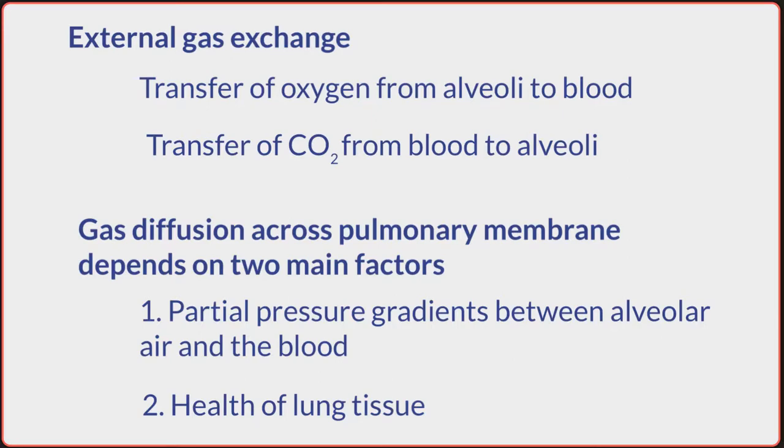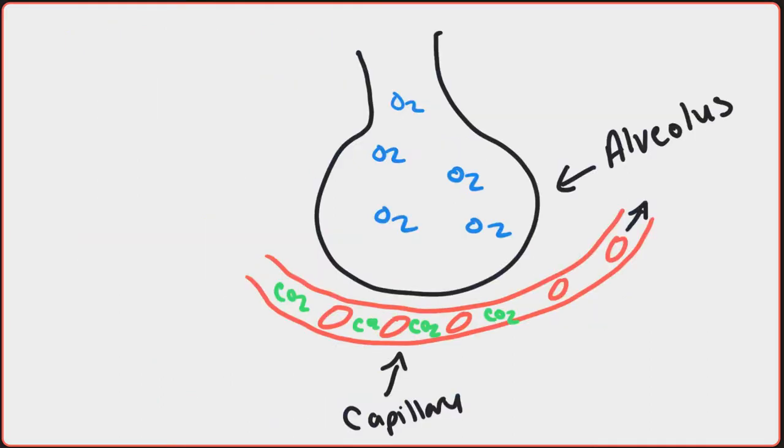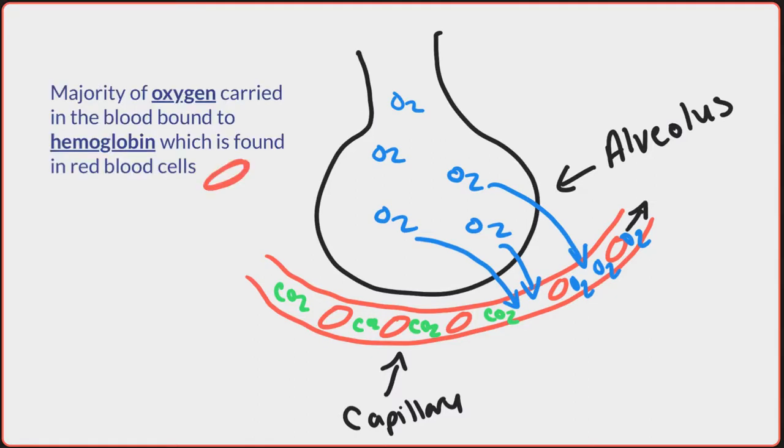Oxygen diffuses from oxygen-rich alveolar air into oxygen-depleted pulmonary arterial blood. Oxygen is not soluble in water, so only about 1% of blood oxygen can dissolve in the plasma. The majority of oxygen is carried in the blood bound to hemoglobin found in the red blood cells. Since the partial pressure of oxygen is high in the lungs due to the atmospheric air that has come in, oxygen can readily bind to hemoglobin within the capillaries.